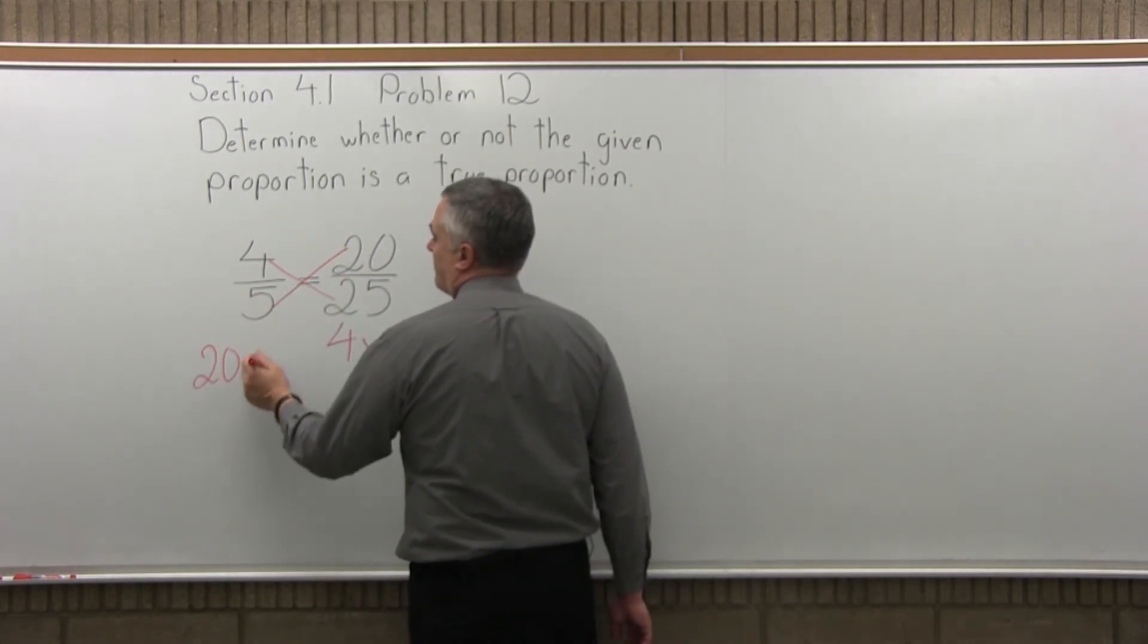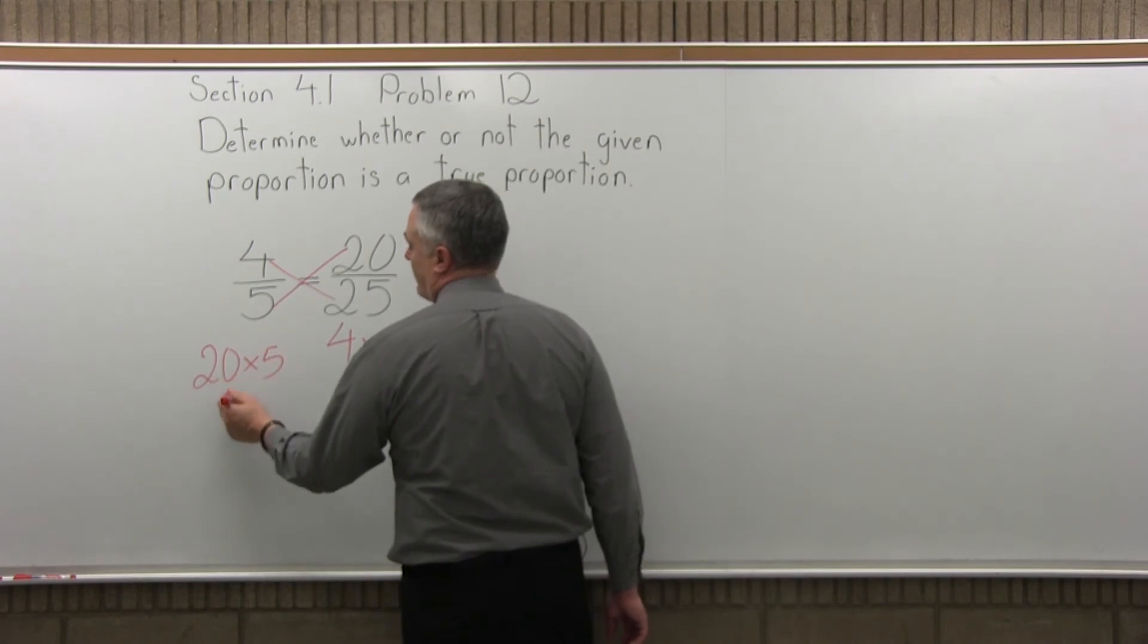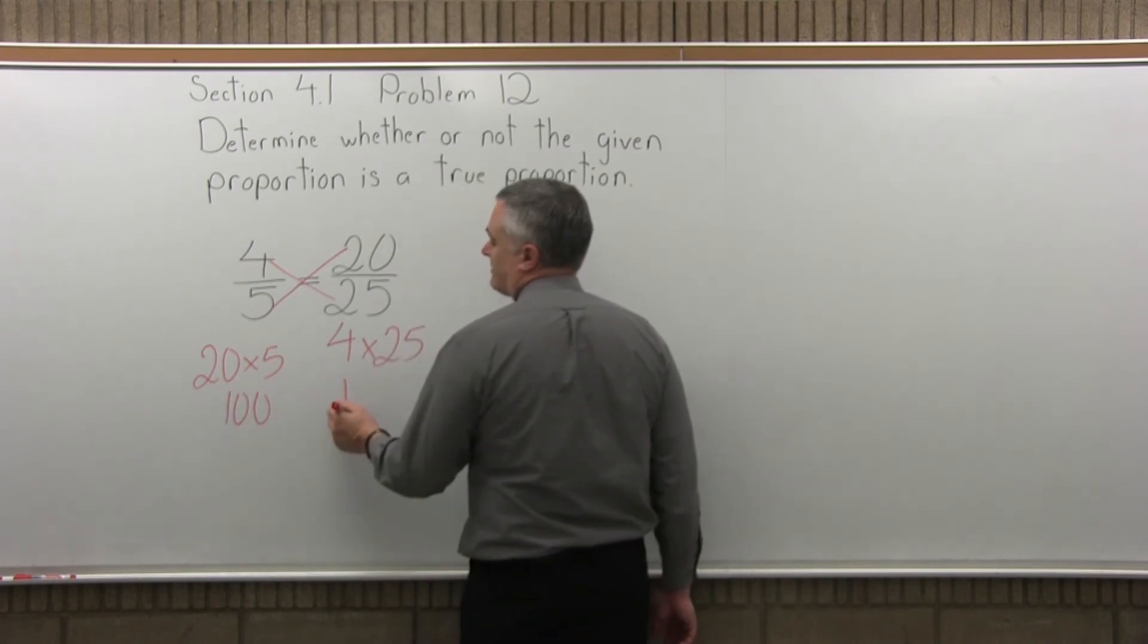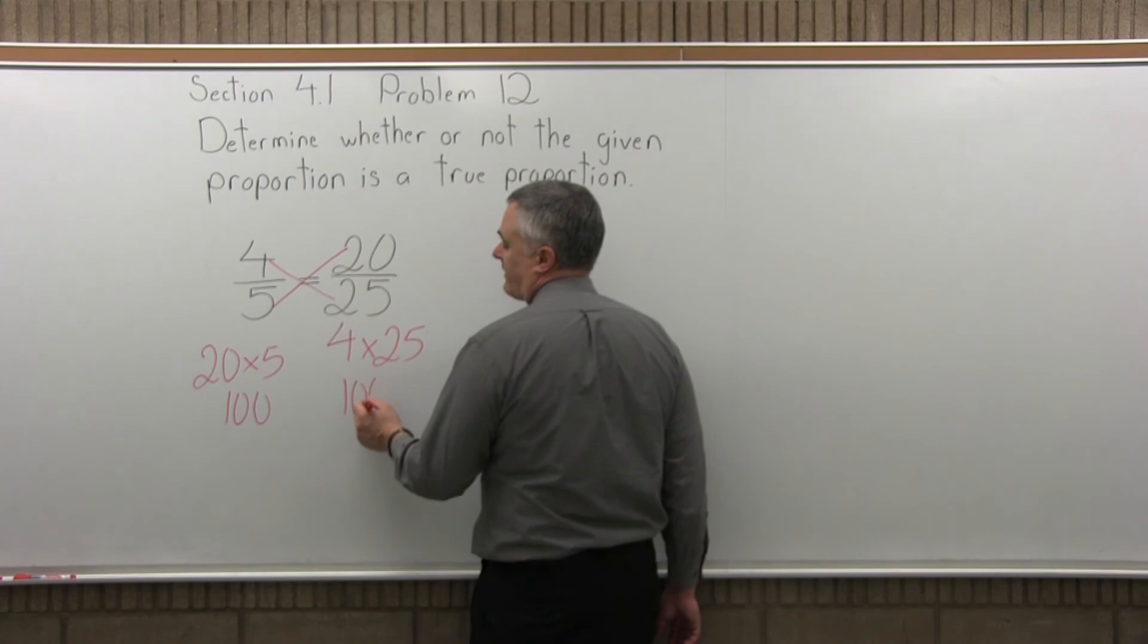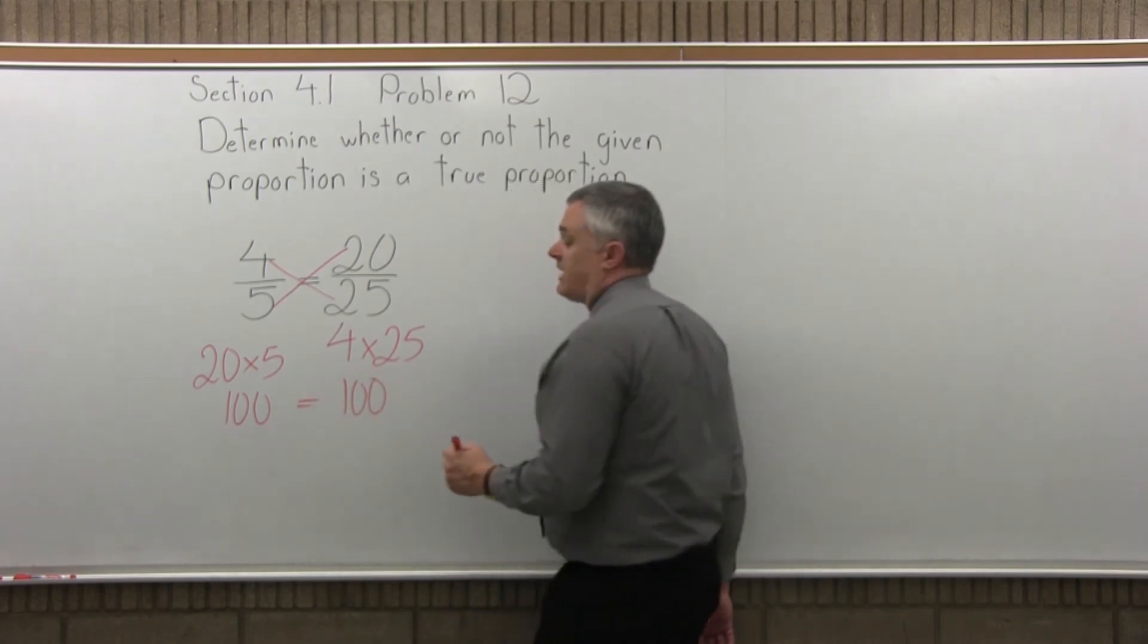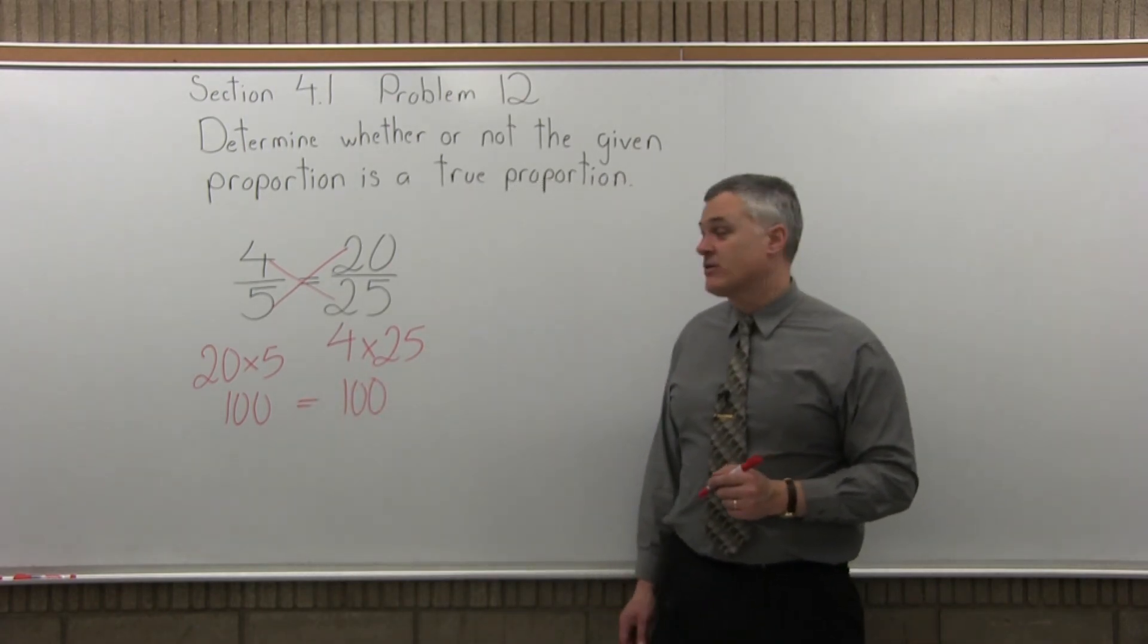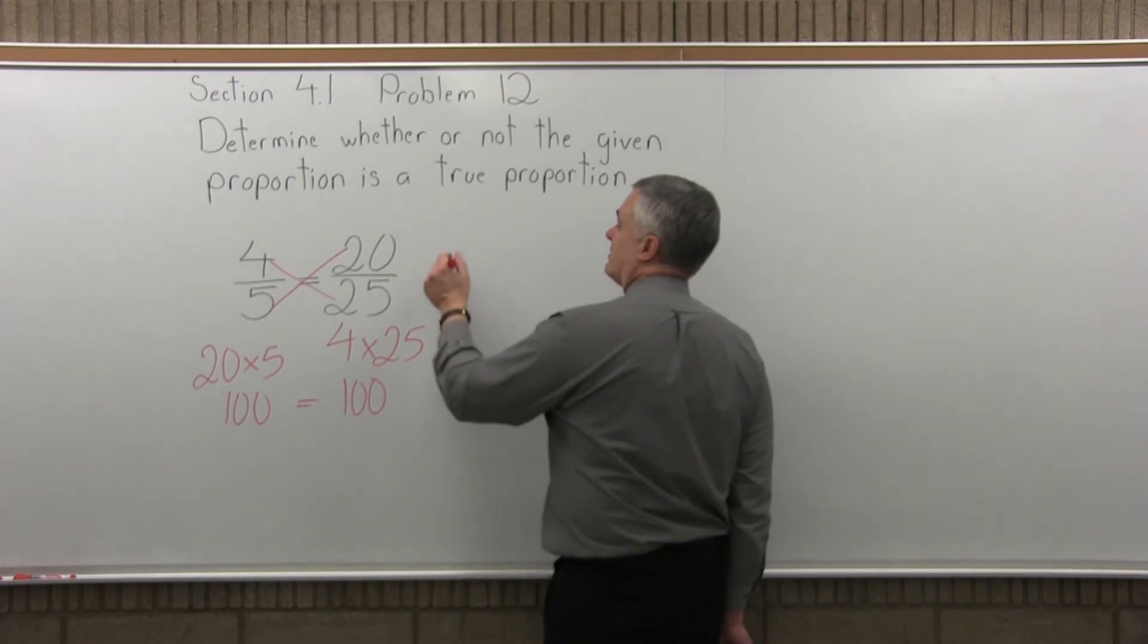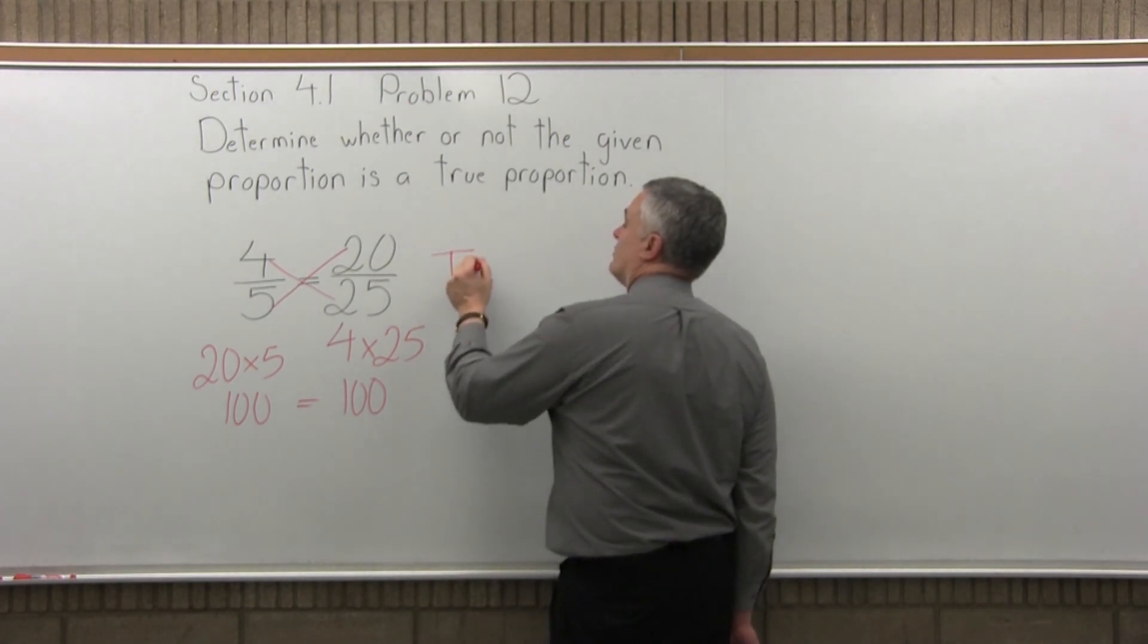And as I multiply that, 20 times 5 is 100. 4 times 25 is also 100. And the two paths when you multiply across are equal. 100 equals 100. So this is a true proportion.